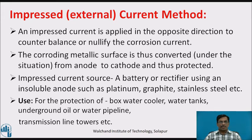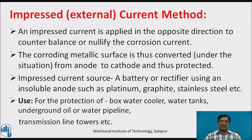The impressed current source is a battery or rectifier using an insoluble anode such as platinum, graphite, or stainless steel. This method is used for the protection of box water coolers, water tanks, underground oil or water pipelines, transmission lines, towers, etc.